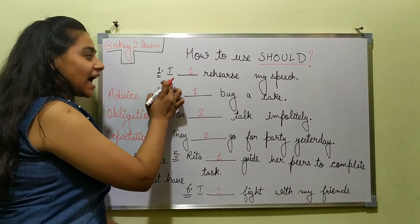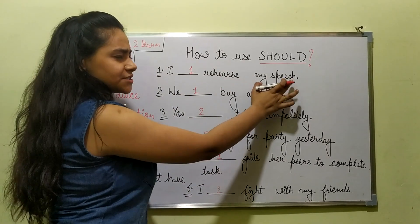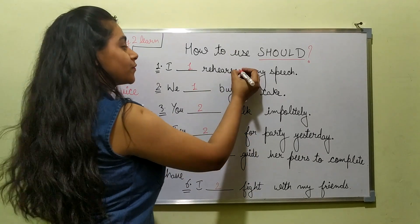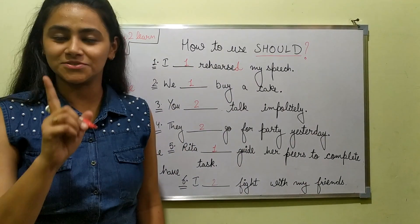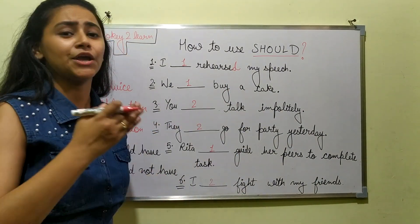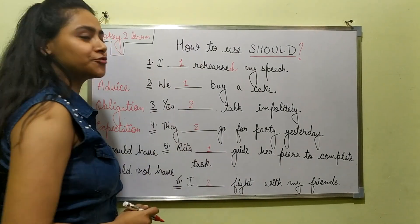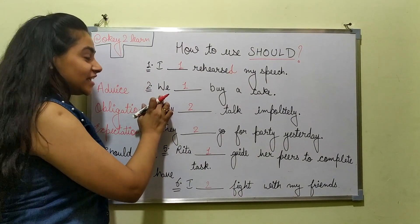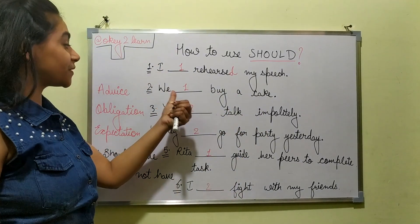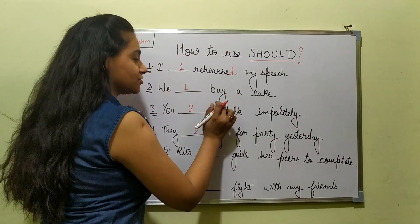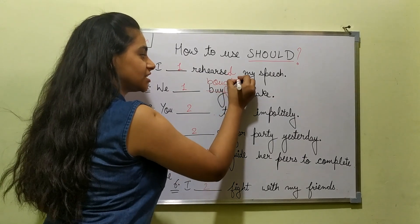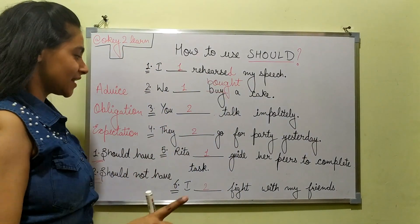First sentence: 'I should have rehearsed my speech.' It is past, so: 'I should have rehearsed my speech' — absolutely correct. There are some past forms where we just add -d or -ed to make it past. Next: 'We should have buy a car' — this is incorrect. It should be 'We should have bought a car.' We write b-o-u-g-h-t because we are using 'have' before it, so we need the past participle.